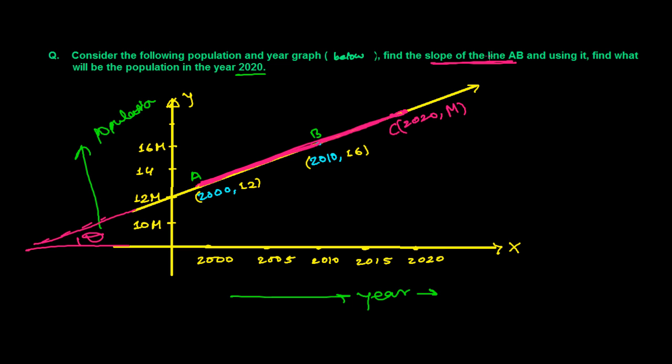So first, as the question is saying, let's find the slope of AB. Slope of AB will be simple difference of Y coordinate, Y2 minus Y1 over difference of X coordinate. So here, our Y coordinate is how much? Let me suppose this is X2, Y2, and this as X1, Y1. So that time, Y2 minus Y1, that is 16.